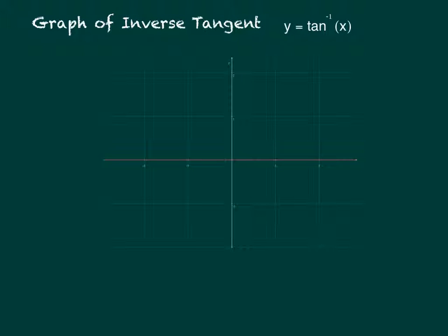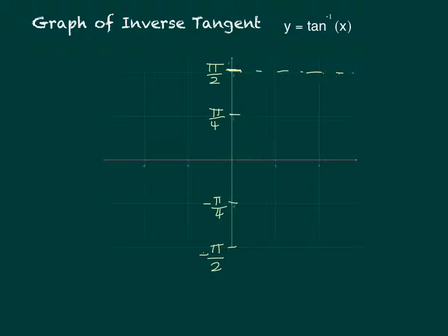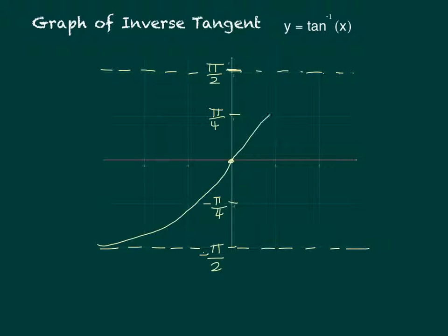The inverse tangent graph, y equals inverse tangent of x, extends side to side forever. Label the vertical axis with pi over 2, pi over 4, negative pi over 4, and negative pi over 2. There are horizontal asymptotes at y equals pi over 2 and y equals negative pi over 2 — these correspond to the vertical asymptotes of the original tangent. The graph passes through (0, 0) and approaches those asymptotes on both sides.